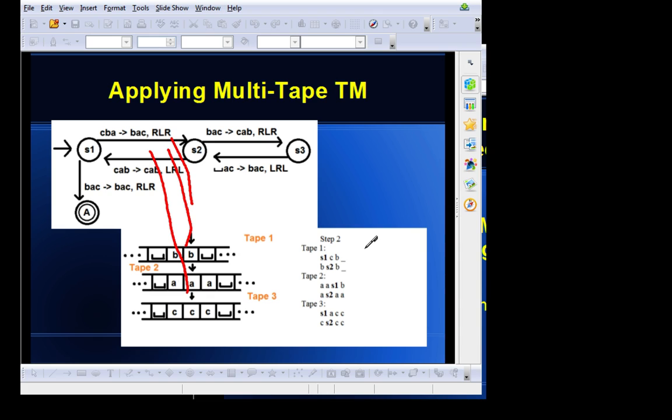And now transitioning from state 2 to state 3, we'll see that BAC will become CAB, with the heads moving right, then left, then right, corresponding to each tape individually.